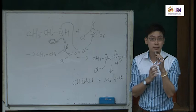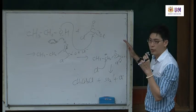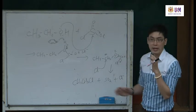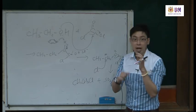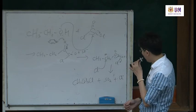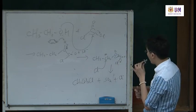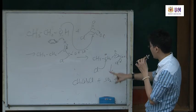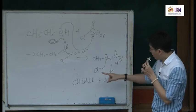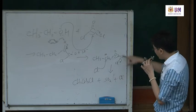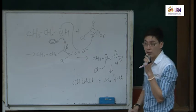In the exam, if you are asked to show the mechanism, make sure you show this mechanism, because this is SN2 — an SN2 mechanism. It involves 2 species in one step; everything is concerted, happening in one step. You got the substitution product — the SN2 product.